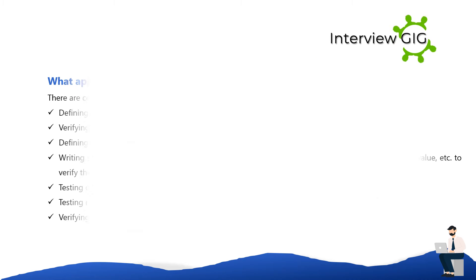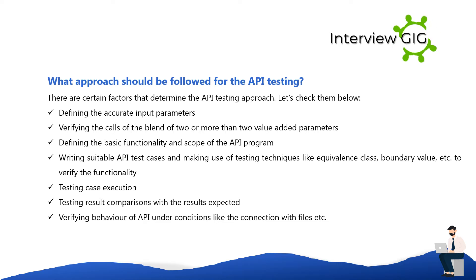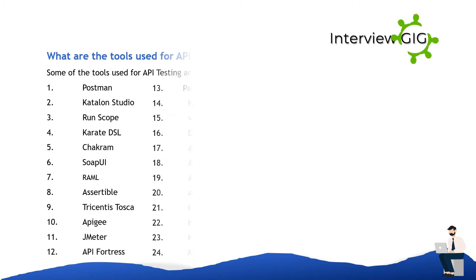What approach should be followed for API testing? Certain factors determine the API testing approach: defining accurate input parameters; verifying the cause of a combination of two or more value-added parameters; defining the basic functionality and scope of the API program; writing suitable API test cases and making use of testing techniques like equivalence class and boundary value to verify functionality; executing test cases; comparing testing results with expected results; and verifying behavior of the API under conditions like connection with files.